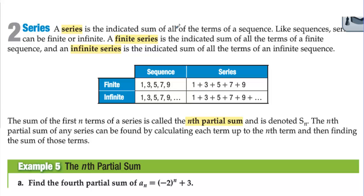A series is the indicated sum of all terms of a sequence. Like sequences, series can be finite or infinite. A finite series is the sum of all terms of a finite sequence, and an infinite series is the sum of all terms of an infinite sequence. For example, the finite sequence 1, 3, 5, 7, 9 gives a finite series by adding those terms. The sum of the first n terms is called the nth partial sum, denoted S sub n. The second partial sum of 1 + 3 + 5 + ... would be 1 plus 3 equals 4; the third would be 1 plus 3 plus 5 equals 9.